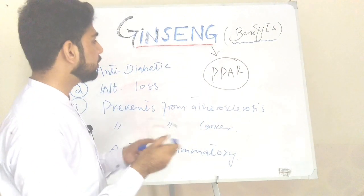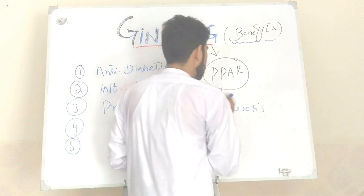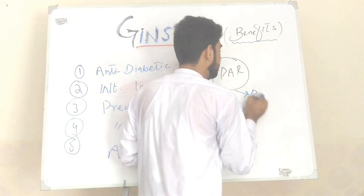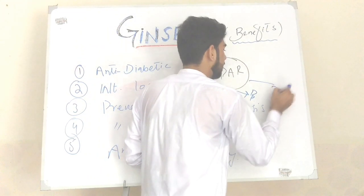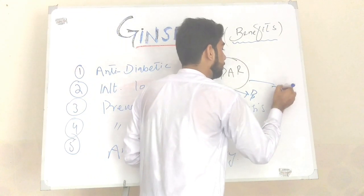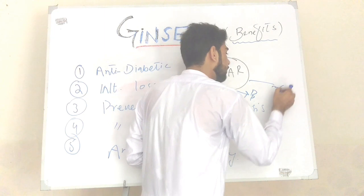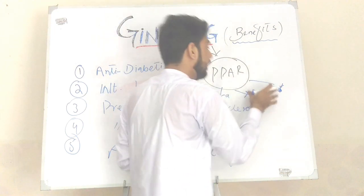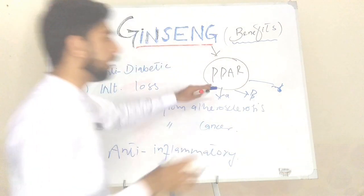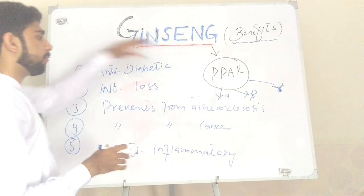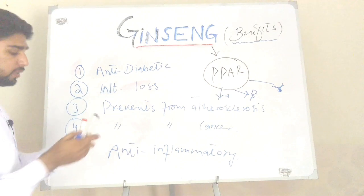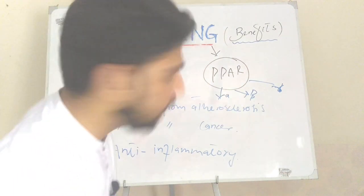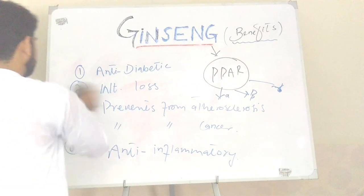There are three types of PPAR: alpha, beta, and gamma. PPAR gamma is activated by ginseng, and then PPAR gamma performs all these functions. We will discuss all these functions in detail.